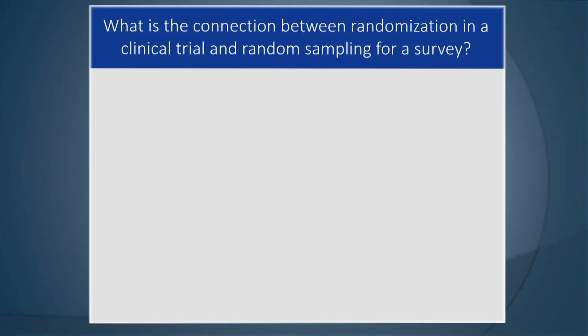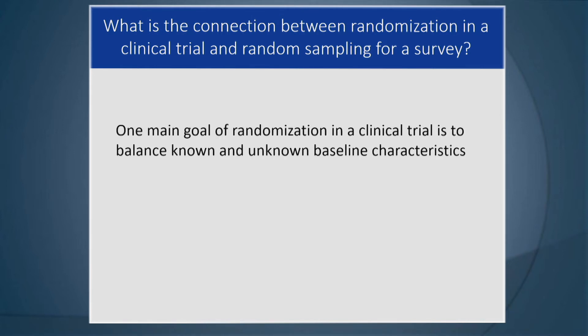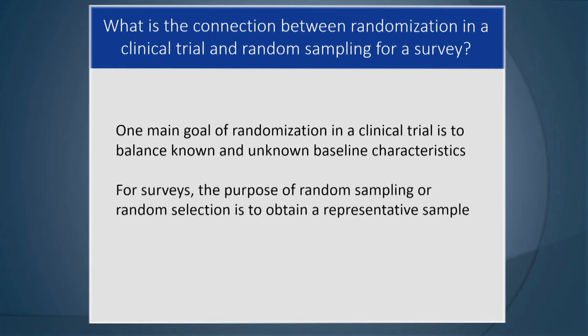What is the connection between randomization in a clinical trial and random sampling for a survey? One main goal of randomization in a clinical trial is to balance known and unknown baseline characteristics. For surveys, the purpose of random sampling is to obtain a representative sample — you want those being surveyed to be representative of the population out there.